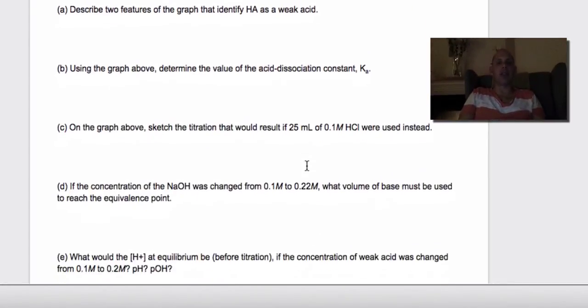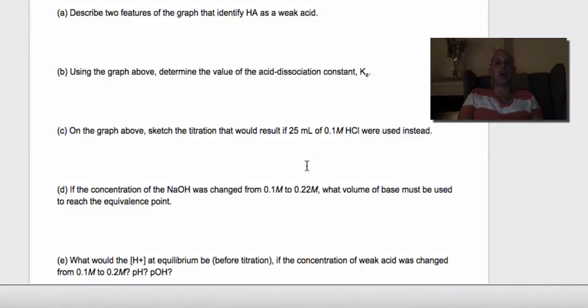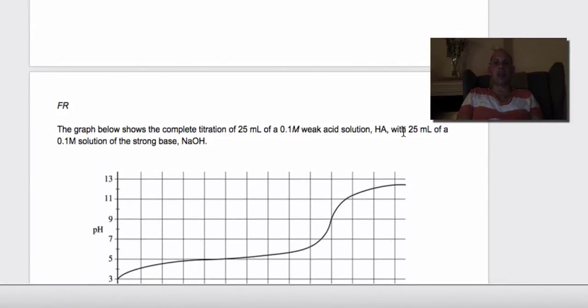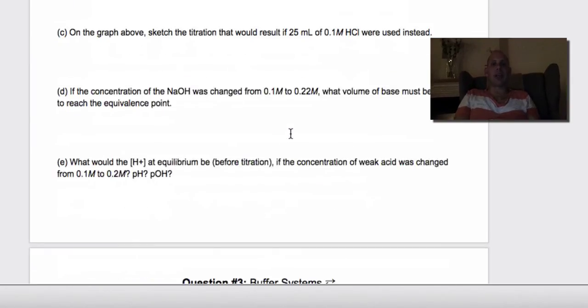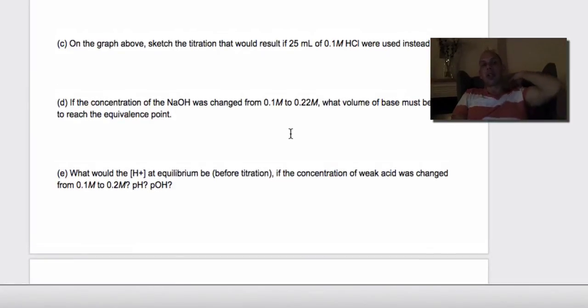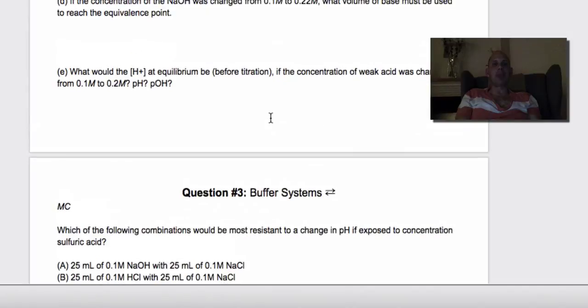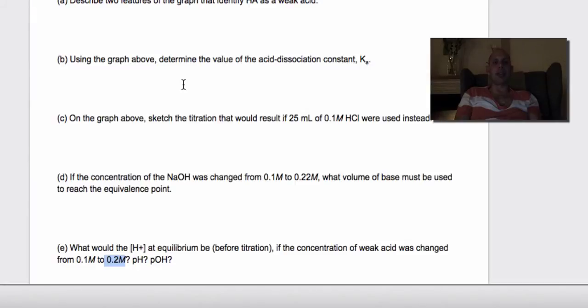If the concentration of NaOH was changed to 0.22, what volume? So in this case, you're simply going to multiply Va, which is 25, times Ma, which is 0.1, and in this case you're simply going to divide it by 0.22 to get the answer. And what would the concentration of H plus be? So we know that H plus for a weak acid is simply the square root of the Ka, 1 times 10 to the minus 5th, times the concentration of the acid. And the total, so that's 0.1, so that's going to give you H plus. If you take the negative log of that, you're going to have pH. And actually they're saying that it was changed to 0.2, so the square root of 0.2 times 1 times 10 to the minus 5th is H plus. The negative log of that is pH, and 14 minus that is pOH.